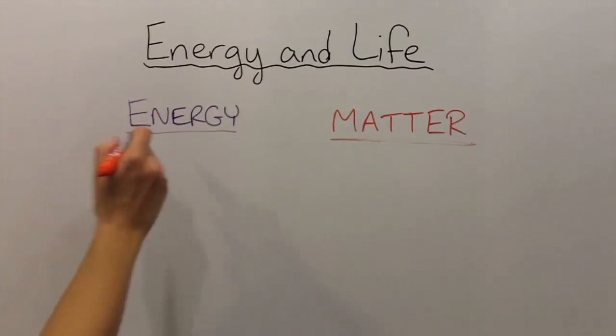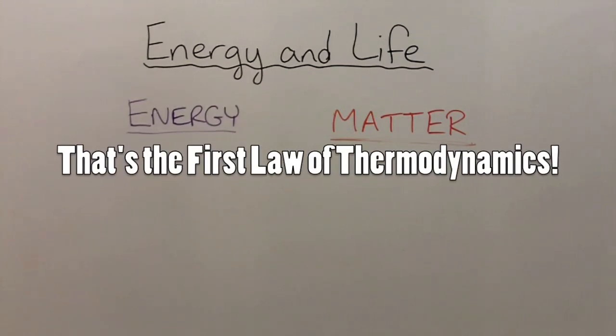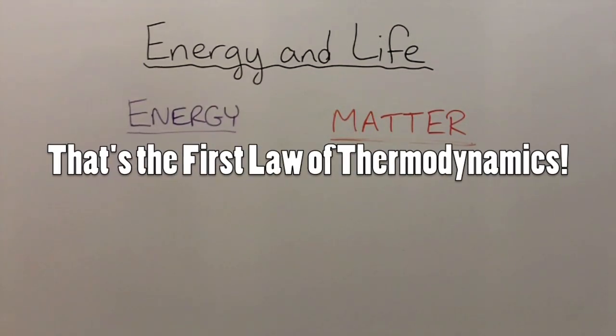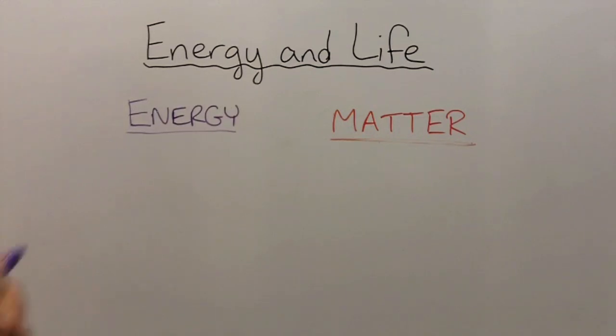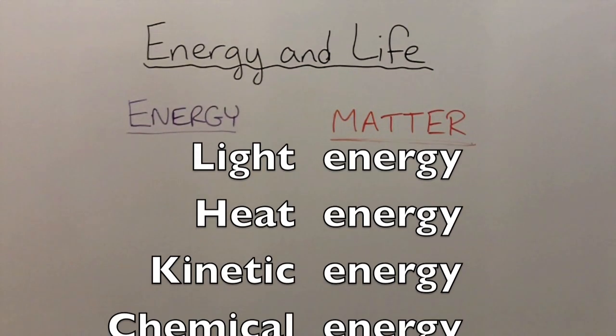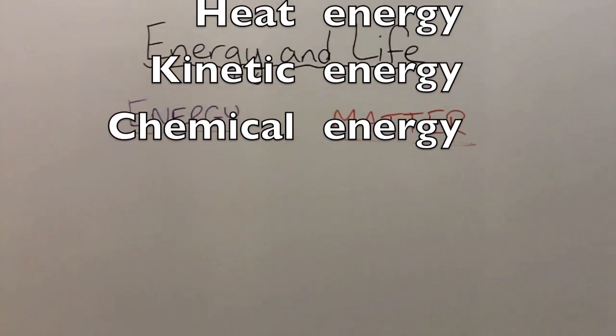So living things have to get both energy and matter in order to stay alive. As you have probably heard before, energy and matter cannot be created or destroyed. Living things simply move them around, store them, and convert them to more useful forms. In the case of energy, there are forms such as light energy, heat energy, kinetic energy, and chemical energy.